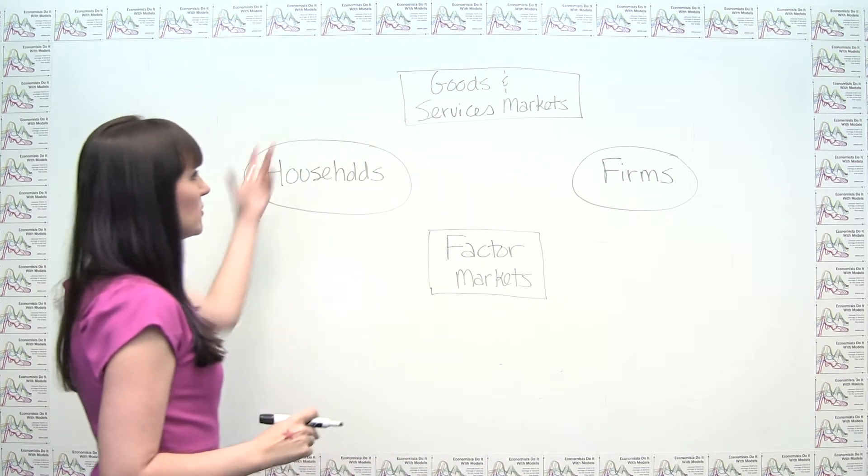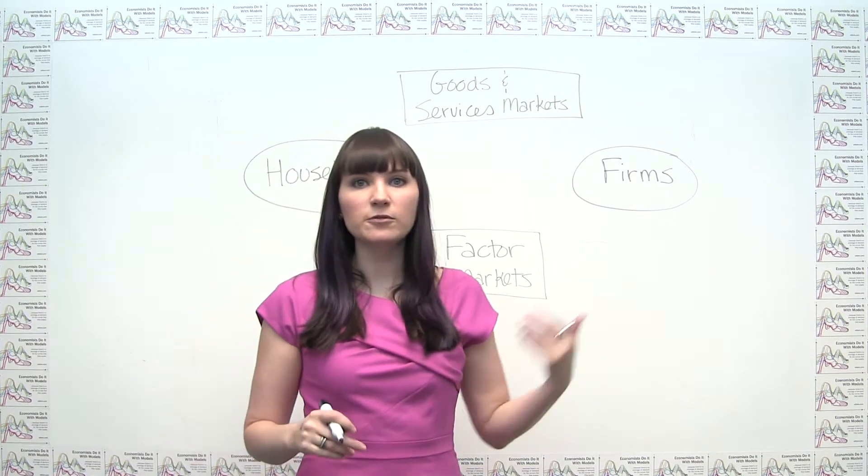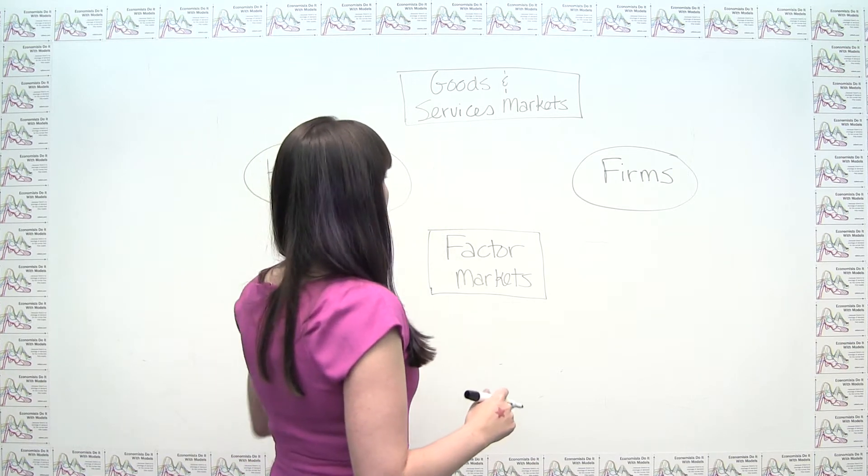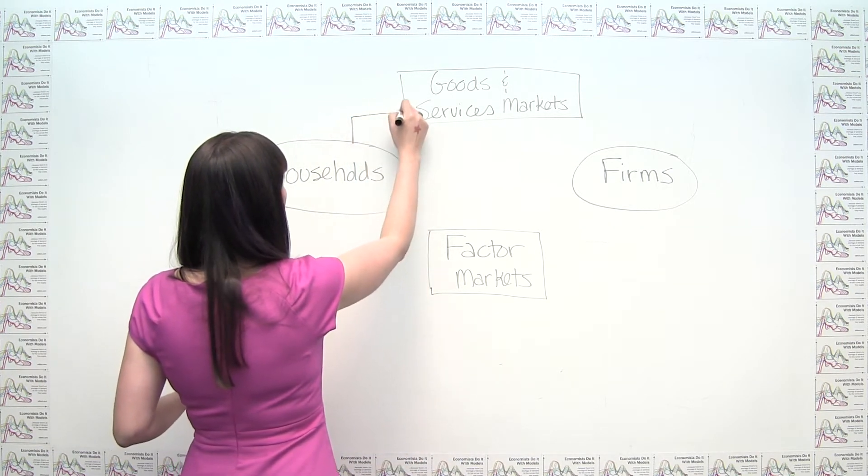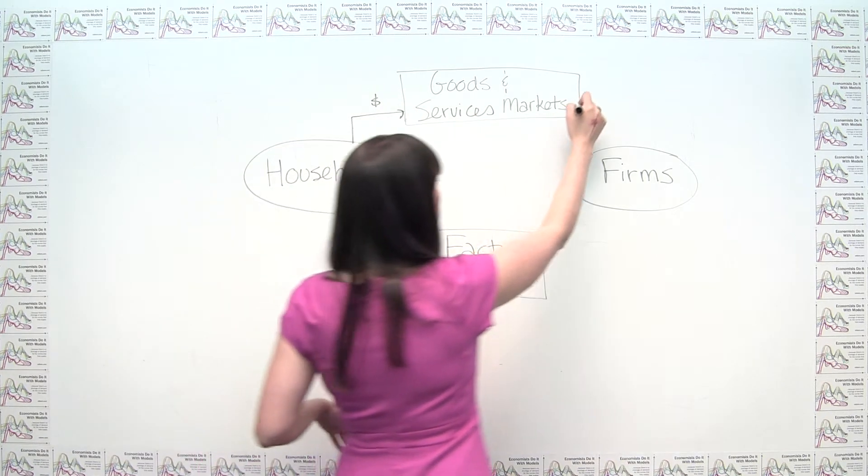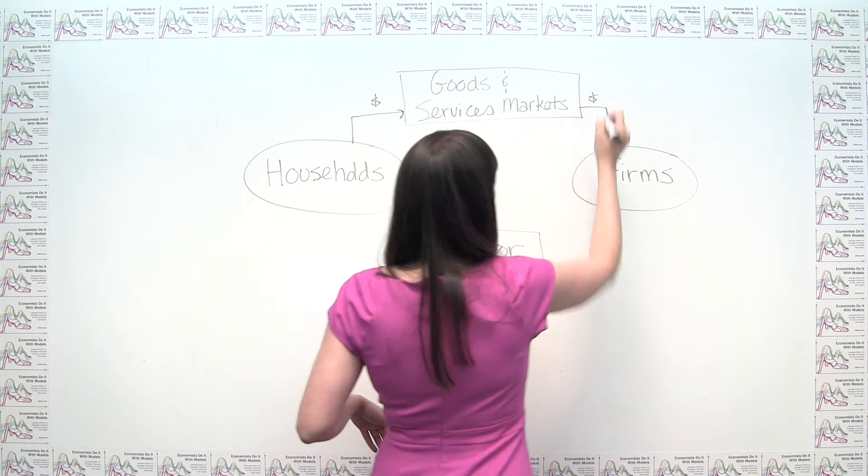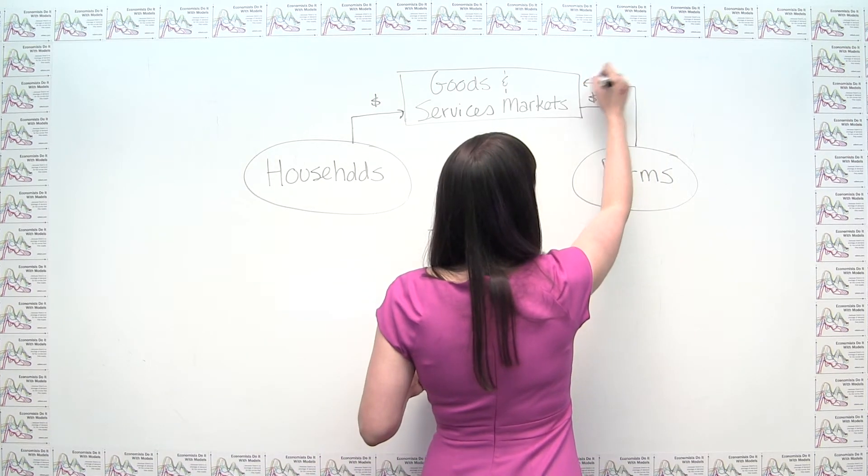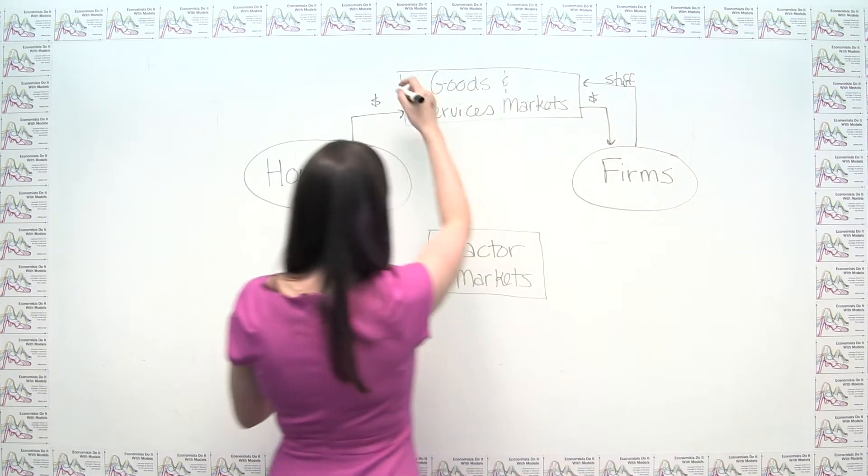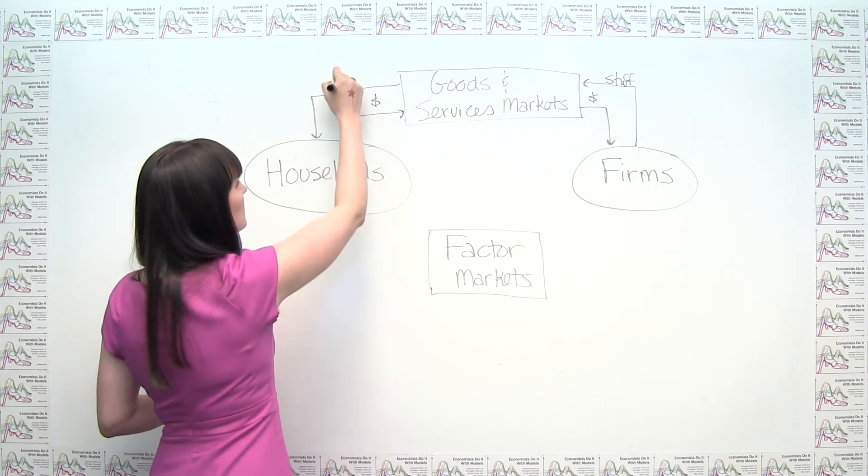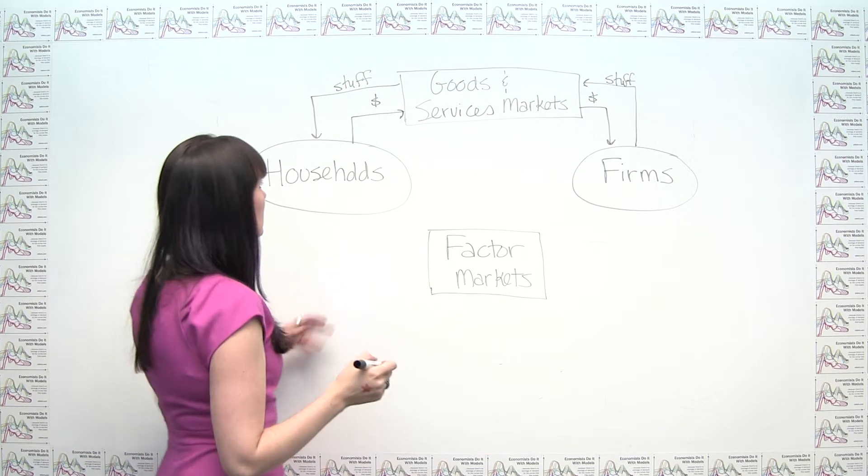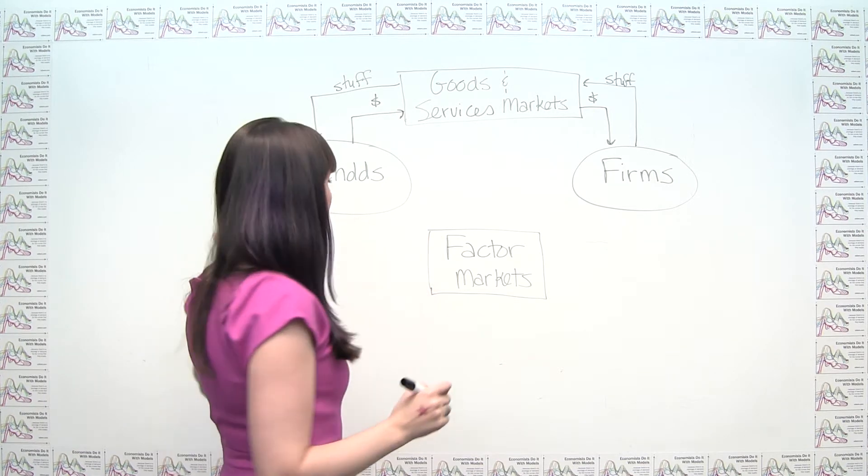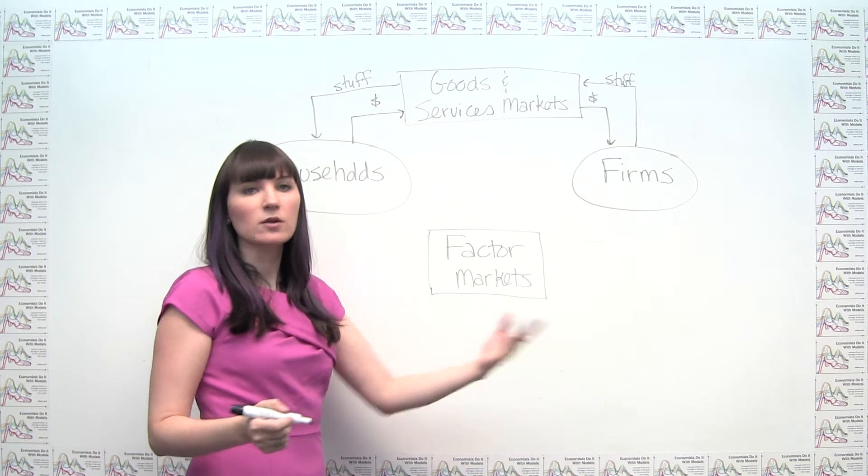And we can think about how the flow of both money and stuff is going in this economy. So if we think about the goods and services market, we have money going from households to firms because the households are buying stuff. And we have stuff going from firms to households in return.